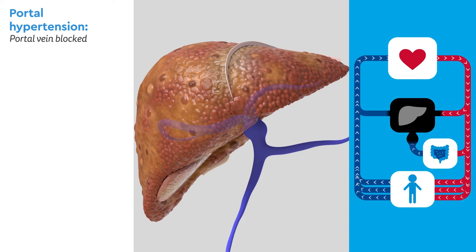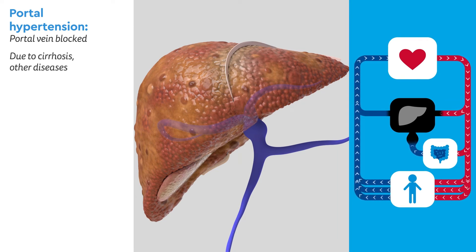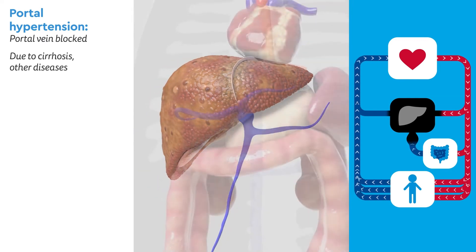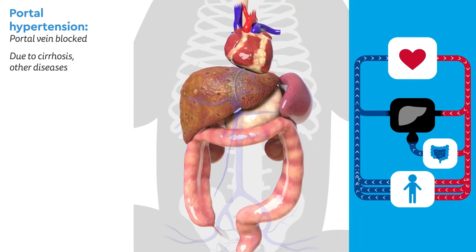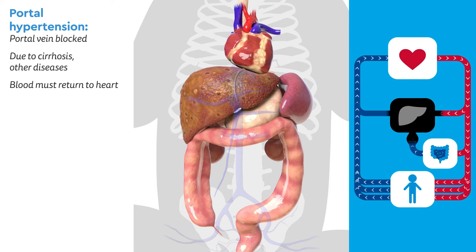Blockages in the liver most commonly come from cirrhosis, or scarring of the liver, and a variety of diseases can also contribute to portal hypertension. Eventually, the body starts looking for ways to relieve the pressure and return blood to the heart.